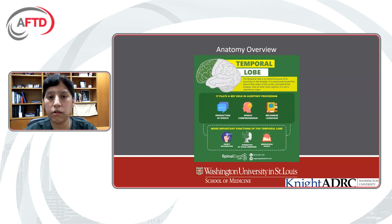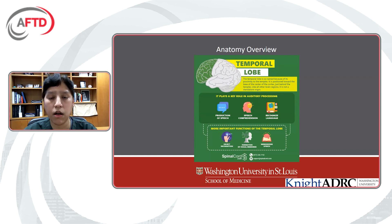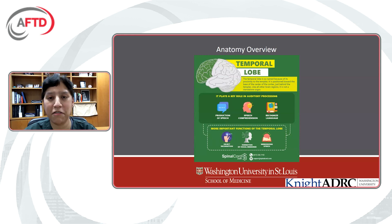On to T — that's the temporal lobe, the lobe sitting behind the temples above the ears. This is also a complex region. A key part of it, shown in the center box, has to do with language: the receiving of language, the comprehending of it, and then the expressing of it — all those components coordinated in the temporal lobe. And then bottom right, we see memory as well. So an important function of the temporal lobe, a little bit less discussed today, is also memory.